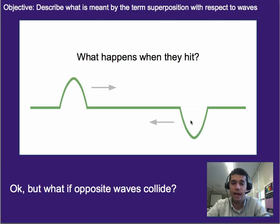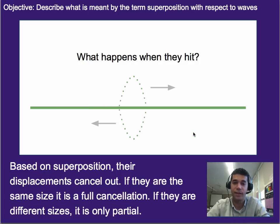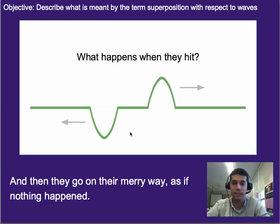Alright, well, as they go towards each other, what's going to happen is you're still going to add the displacements. Which means if this is a positive displacement and this is a negative displacement, and they're both the same size, they cancel each other out. So based on superposition, their displacements cancel each other out. And afterwards, they're going to continue to go in the same direction they were going as if nothing happened.